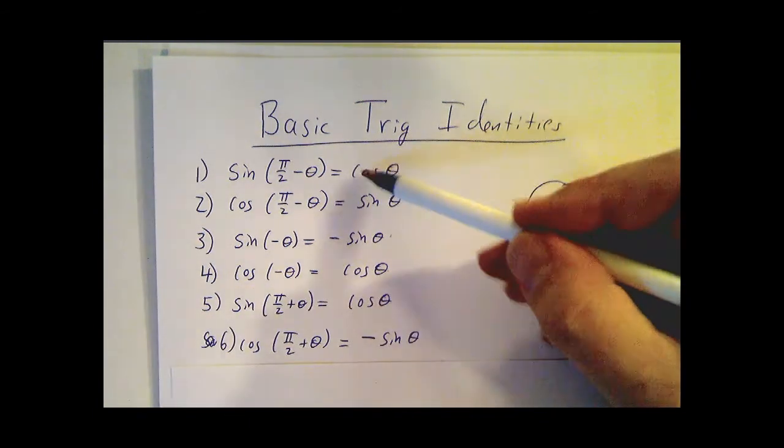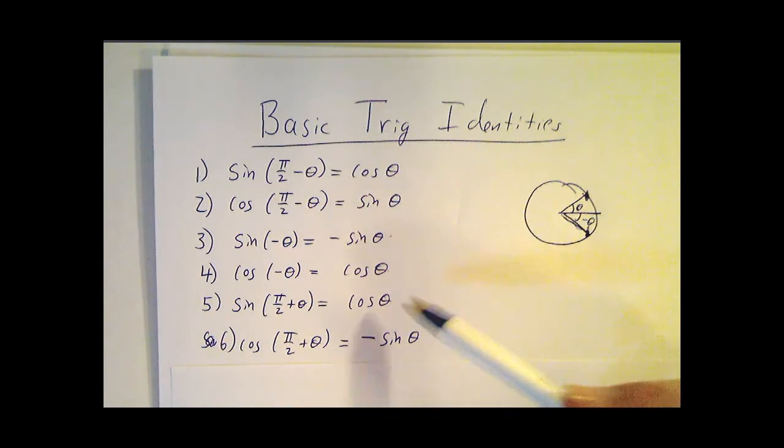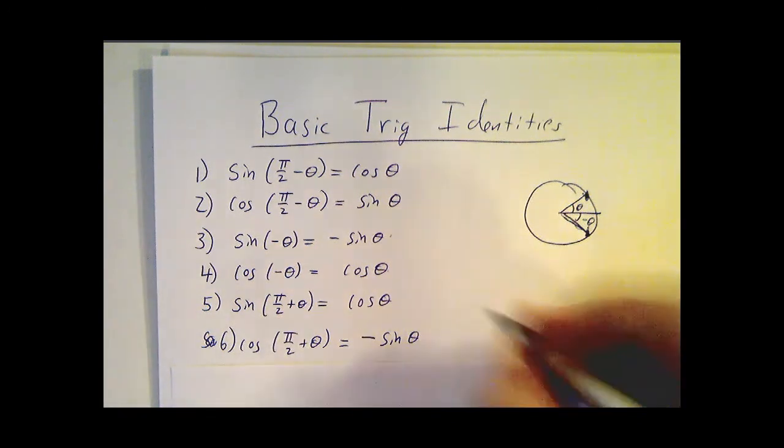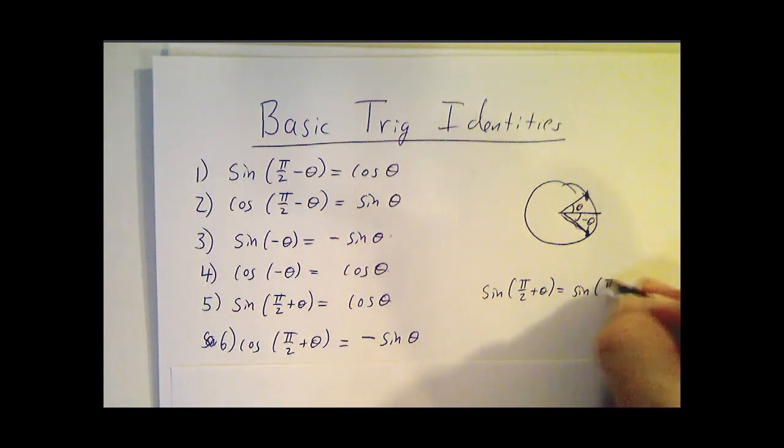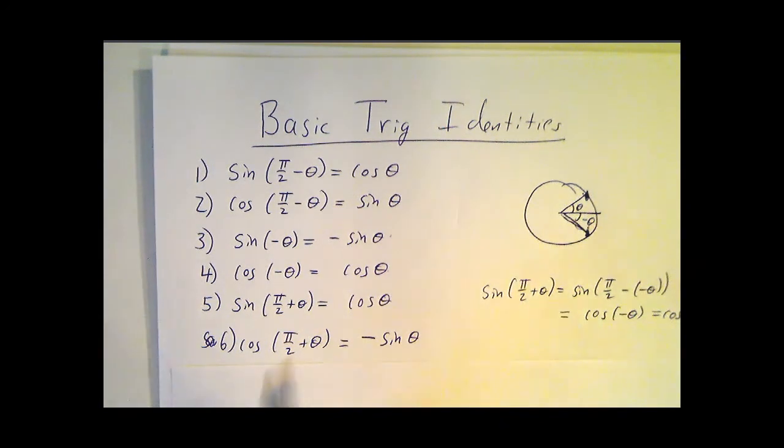You put these two things together and you get what happens when you add 90 degrees to an angle. So the sine of π/2 plus theta can be written as the sine of π/2 minus negative theta, and that's the cosine of theta. And likewise the cosine of π/2 plus theta is minus sine of theta. Same kind of argument.